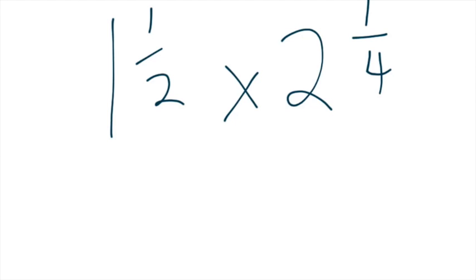And we do this by doing one times the two, which is two, and then we add on the one here, making it three halves.